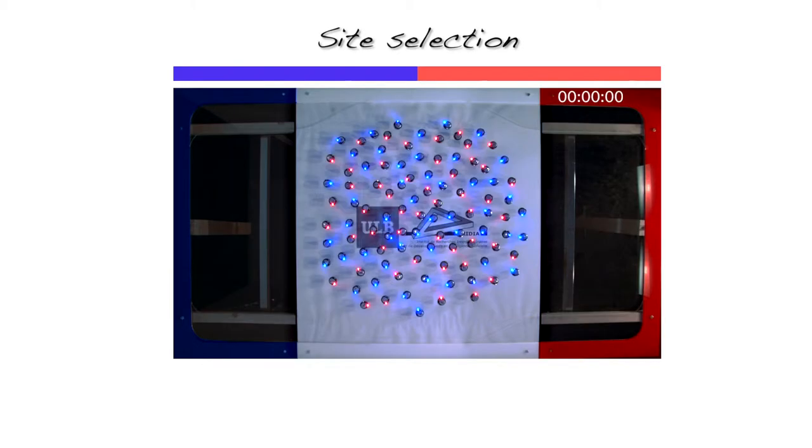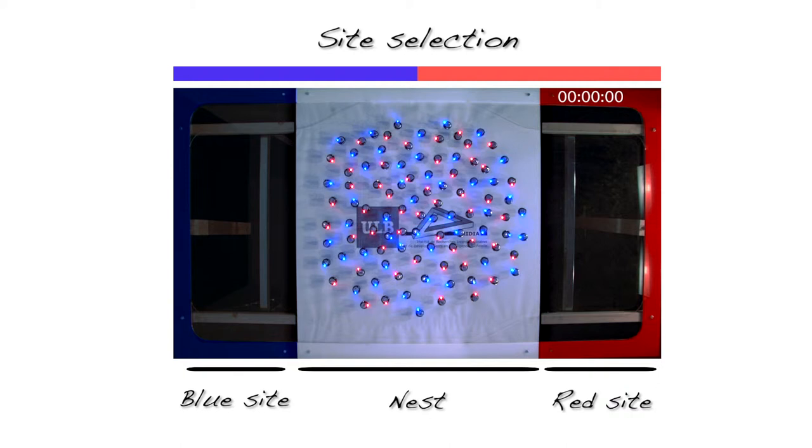We consider a site selection problem to study collective decision-making in a swarm of 100 kilobots. Robots are initially located in the nest, the area where robots exchange site preferences and take individual decisions. From the nest,